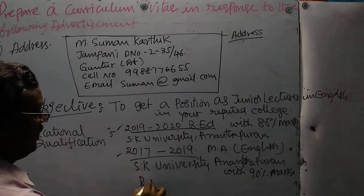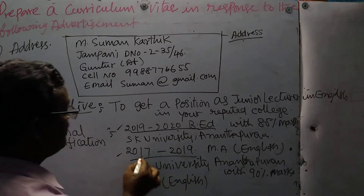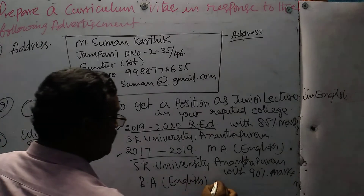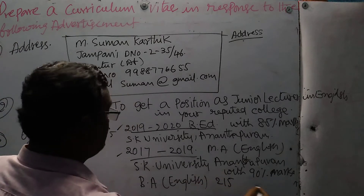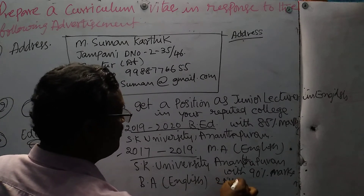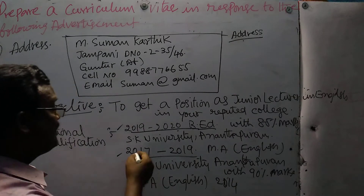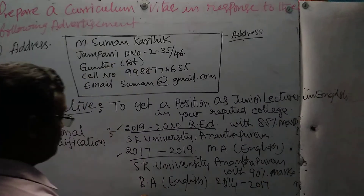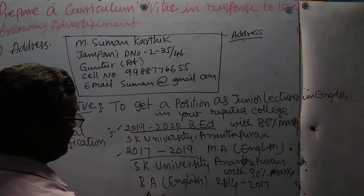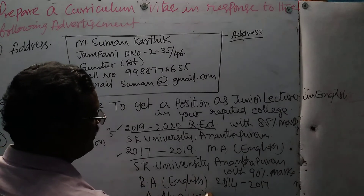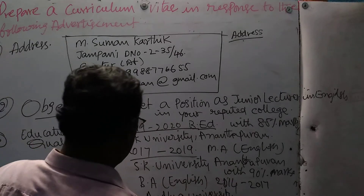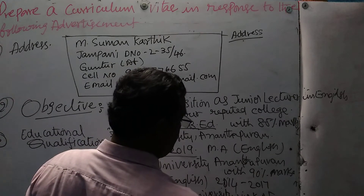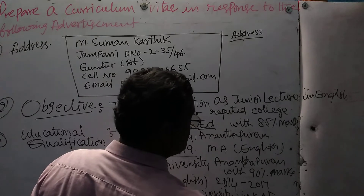Now, degree: BA English. Three years back we have to go — 2014-15 first year, 2015-16 second year, 2016-17 third year — degree BA English. Which university? For example, Andhra University. We finished at Visakhapatnam, with 89% of marks.